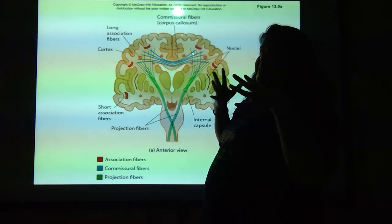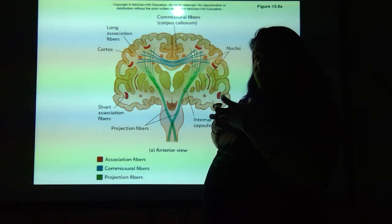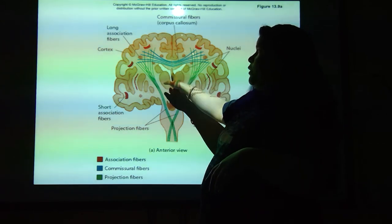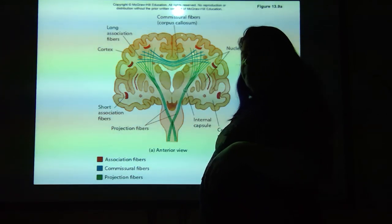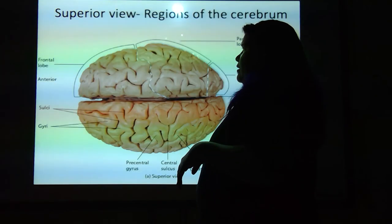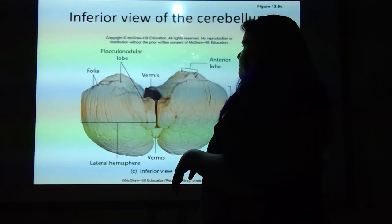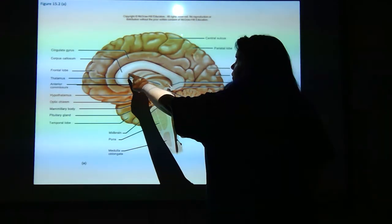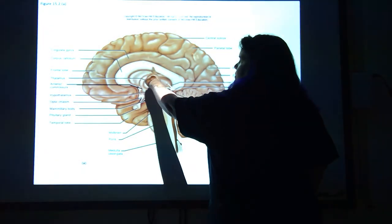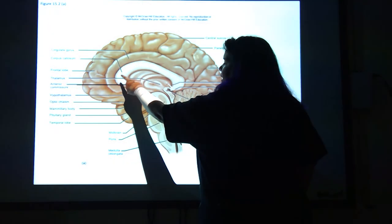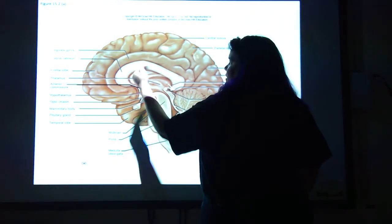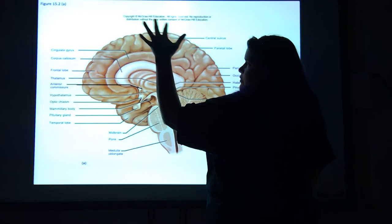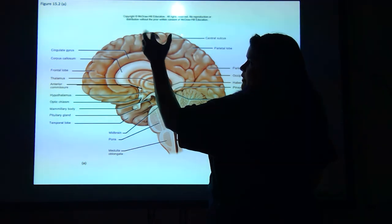The biggest concentration of commissural fibers is the corpus callosum. Going back, the corpus callosum is this structure here, where those fibers go from one hemisphere to the other.